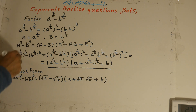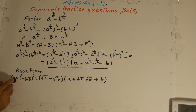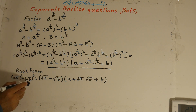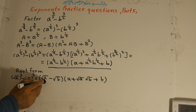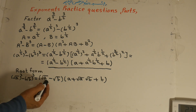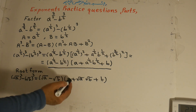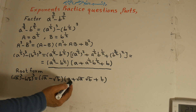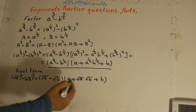In root form: the square root of a, all to the power of 3, minus the square root of b, all to the power of 3, equals the square root of a minus the square root of b, times a plus the square root of a times the square root of b, plus b.